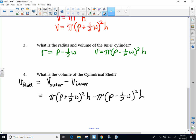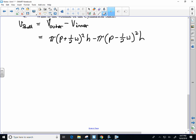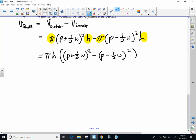First thing I notice in simplifying is that we have a commonality: π and H are in both terms, so I can undistribute that, a.k.a. factor that out. That'll give us just (P plus a half W)² minus (P minus half W)² and some algebra, some algebra, distributive property.